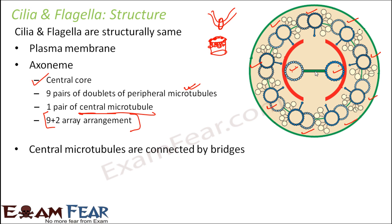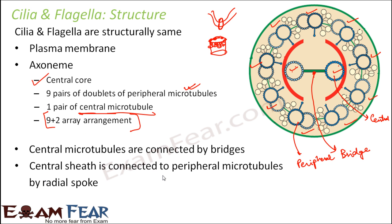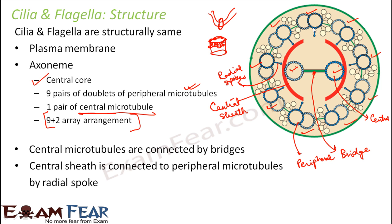The two central microtubules are connected to each other by bridges. The central microtubules are covered by a central sheath, and this central sheath is connected to the peripheral microtubules by radial spokes — one radial spoke per pair of peripheral microtubules. This is the internal structure of both cilia and flagella, which is identical for both. It is remarkable how many structural components exist inside such thin appendages.